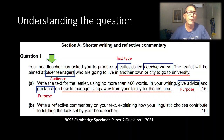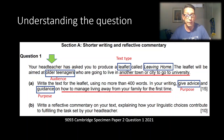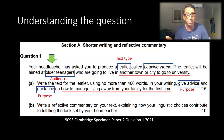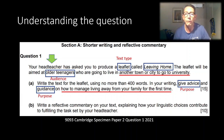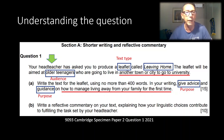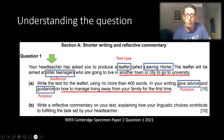So let's read the question: 'The head teacher has asked you to produce a leaflet called Leaving Home. The leaflet will be aimed at older teenagers who are going to live in another town or city to go to university.' Question 1a says: write the text for a leaflet — there's our text type — write no more than 400 words. This is important. There are 15 marks available; in the previous paper it was 10. You've only got 60 minutes for this question, so your timing is crucial.